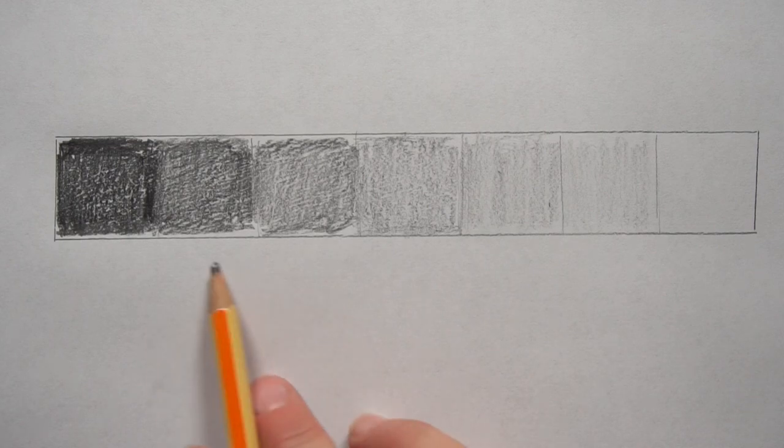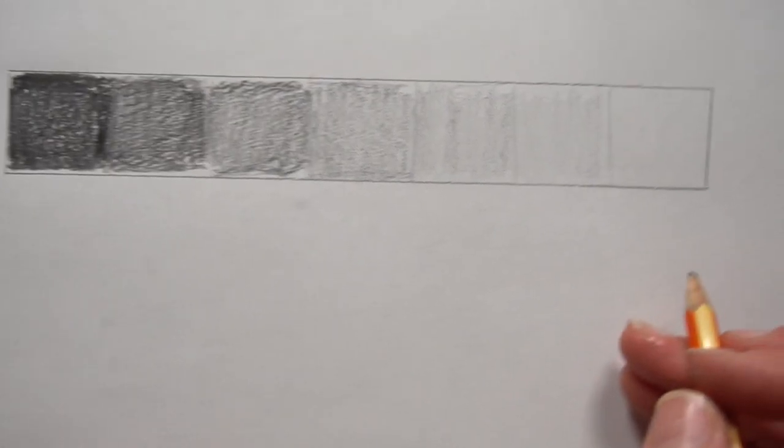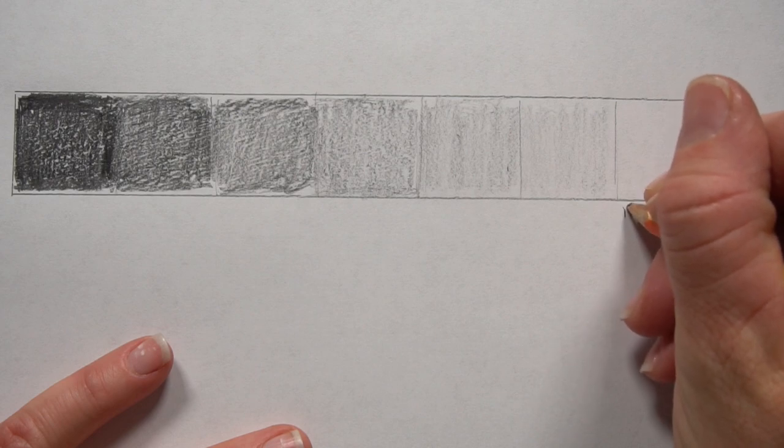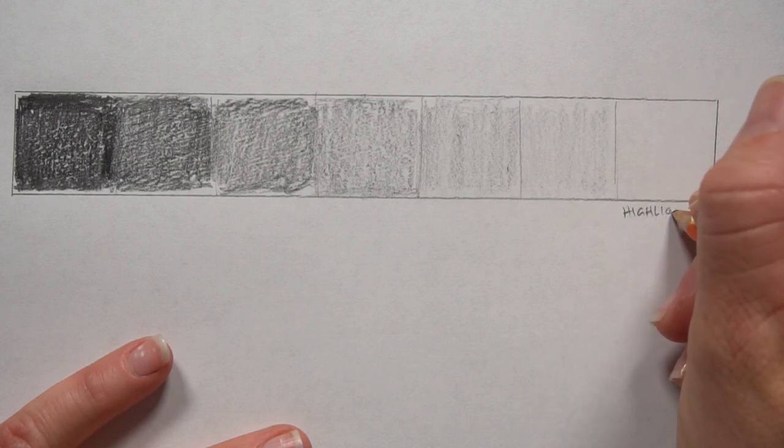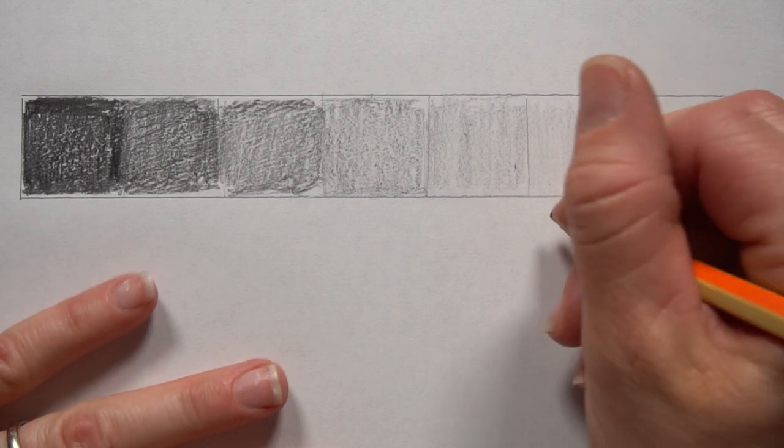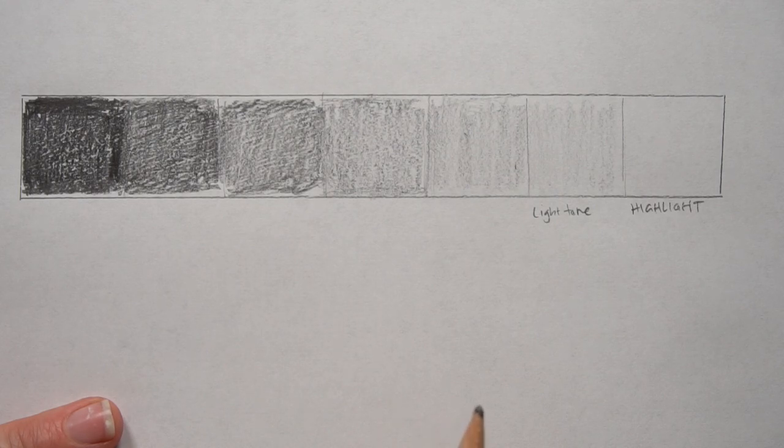So now you have the value scale. I will give you the names of these things if you really want them. Sometimes I don't really use them all the time. But this would be, I've done it in the opposite direction of how I had my other one. So the lightest area is called the highlight. So you can write it in if you want. I'm going to write it in, but you don't have to. So this one is the highlight, the whitest part. And then we have our light tone. Then we have our mid-tone.